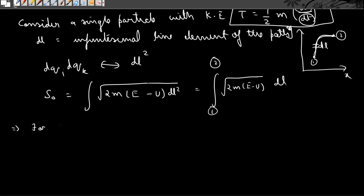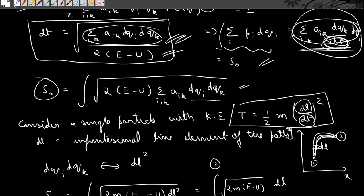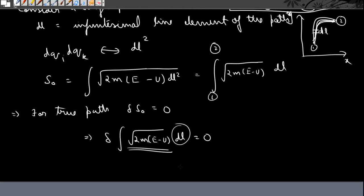For the true path, the variation in the abbreviated action must be zero: δ∫ √(2m(E − U)) dl = 0. This means we are integrating the function √(2m(E − U)) along the path as a line integral — integrating it with respect to the line element dl from point 1 to point 2. This form of writing Maupertuis' principle is called the Jacobi's form.